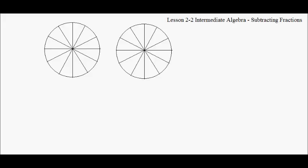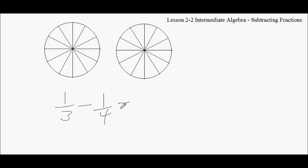And today, instead of adding fractions, we're going to subtract fractions. I have two circles here, and I divided the circles into 12 equal parts. What I'm going to do is take 1/3 minus 1/4 and see what I get.